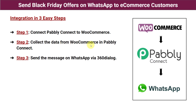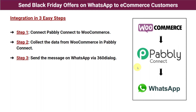Step two: collect the data from WooCommerce into Pabbly Connect — the customer data should be transferred into Pabbly Connect. Step three: send the message on WhatsApp via 360 Dialog. In the final step we send a personalized message to customers on WhatsApp. Here's the twist — we are not integrating WhatsApp directly. Instead we use 360 Dialog, because WhatsApp does not allow you to send messages directly. For that you must use an official API of WhatsApp, which is 360 Dialog.